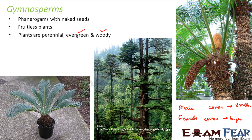The male cones produce sperm which is contained in the pollen grains. The female cones produce eggs which are stored in the ovules. We won't go into the detailed structure of each part right now as that would make things unnecessarily complex. The larger cones are the female cones and the smaller cones are the male cones.